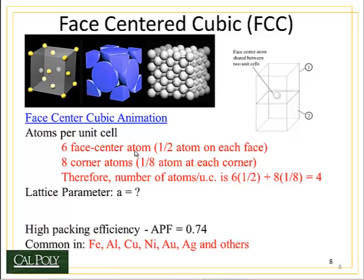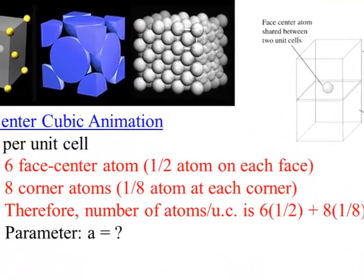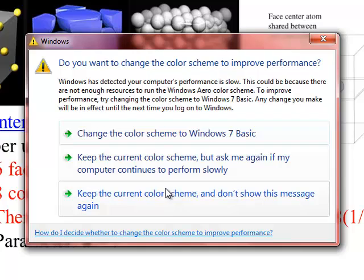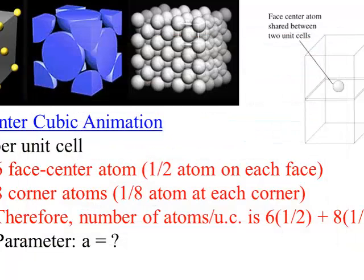If we look at the number of atoms per unit cell, we have six face-centered atoms, but only half of those atoms are on each face. And eight corner atoms, but only one-eighth of those atoms are inside the unit cell. Therefore the number of atoms per unit cell is six times one-half plus eight times one-eighth, which equals four. That's a lot more than we had in the simple cubic, just by adding the face atoms.